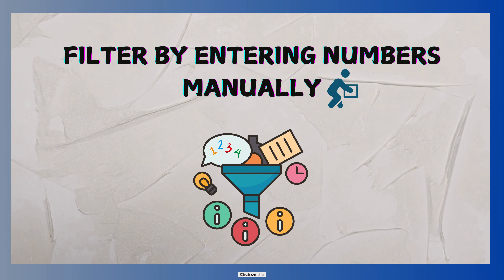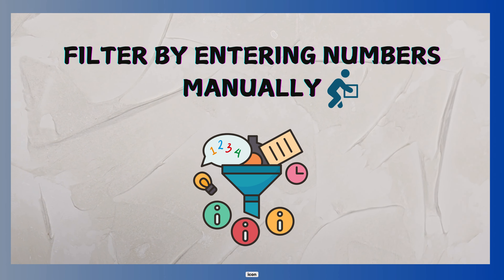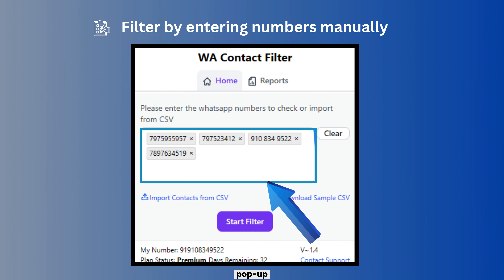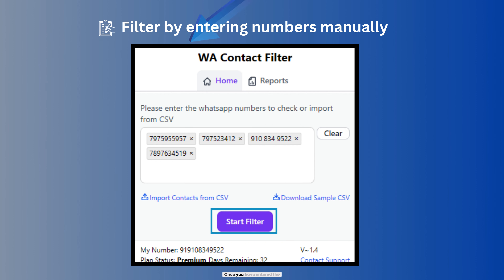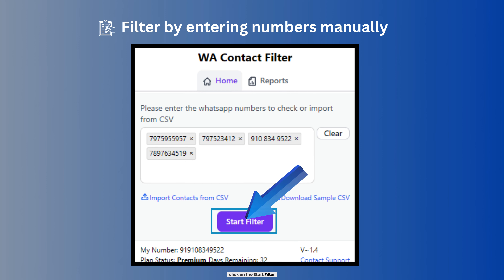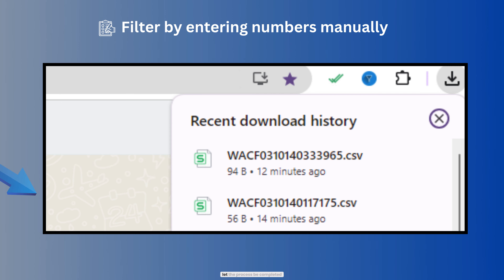Click on the WA Filter icon to open the pop-up. In the extension panel input box, manually enter the phone numbers you want to filter. You can add multiple numbers and even include spaces between them. Once you have entered the numbers, click on the Start Filter button and let the process complete.